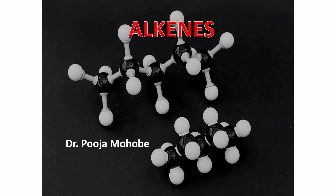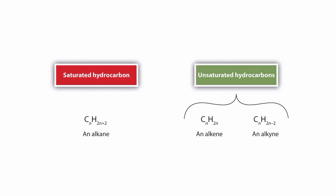Today's topic is alkenes. We have already studied alkanes and cycloalkanes in the previous chapters. Hydrocarbons are divided into two categories: saturated hydrocarbons and unsaturated hydrocarbons. In saturated hydrocarbons we covered alkanes and cycloalkanes, and now in this chapter we are going to study about alkenes.